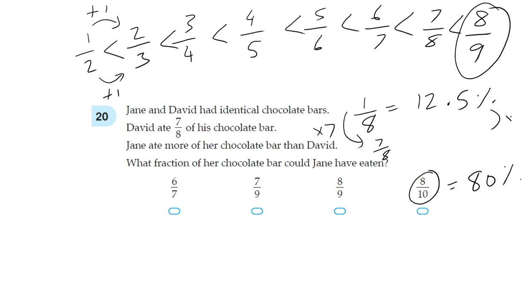So we times by 7, and we times this side by 7 as well. If we do that correctly, that will give you 87.5. So this is actually greater than this, but we need Jane's to be greater than David's, so that's why this can't be correct. Only this can be correct.